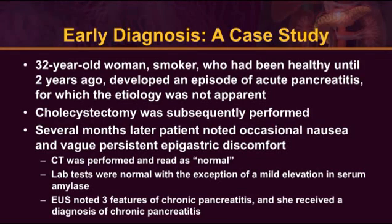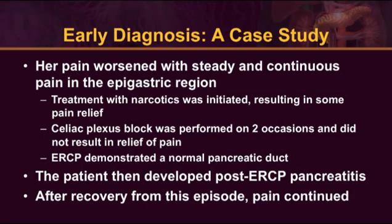She was given a tentative diagnosis of chronic pancreatitis. Subsequent to that, the pain really began to worsen and become much more severe and persistent, with a much more negative impact on quality of life. A decision was made to treat her with narcotics, and gradually the dose was increased over time. Ultimately that was not effective, and she actually underwent celiac plexus block on two separate occasions, neither of which produced significant symptomatic relief. She ultimately underwent an ERCP, where the pancreatic duct appeared normal, but she unfortunately developed post-ERCP pancreatitis.